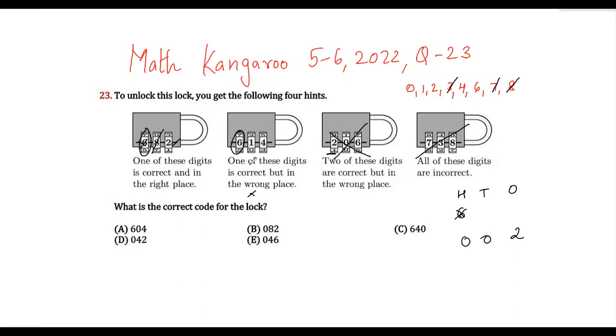Now it says one of these digits is correct but in the wrong place. So one of these digits is correct but in the wrong place. So one of the digits could be a 1 or a 4. Now we know that one of the digits is 0. Now we have to see for 1 and 4.